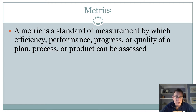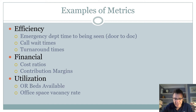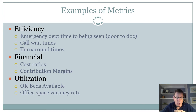A metric is a standard of measurement by which efficiency, performance, progress, or quality of a plan, process, or product can be assessed. It is usually a combination of data elements used for one of those purposes, and it has some type of criteria associated with it. In many cases it is a number — it could be a rate, a ratio, a percentage, or a ranking. Some metrics are fairly simple calculations like simple percentages, while others are functions of sophisticated linear or logistic regression techniques.